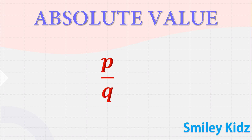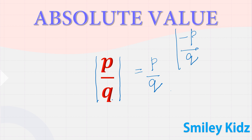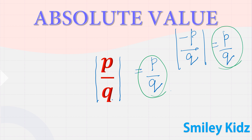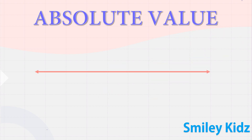Now let us see the absolute value of rational numbers. Let us represent the absolute value of rational numbers on a number line. On the center we have zero; here we have one and here we have minus one. Let's take our examples as four by five and minus four by five.